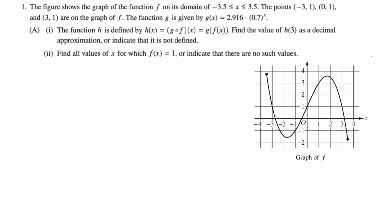The figure shows graph of function f on its domain negative 3.5 to 3.5. The points negative 3, 1, 0, 1, and 3, 1 are on the graph of f. The function g is given by g of x equals 2.916 times 0.7 to the x.